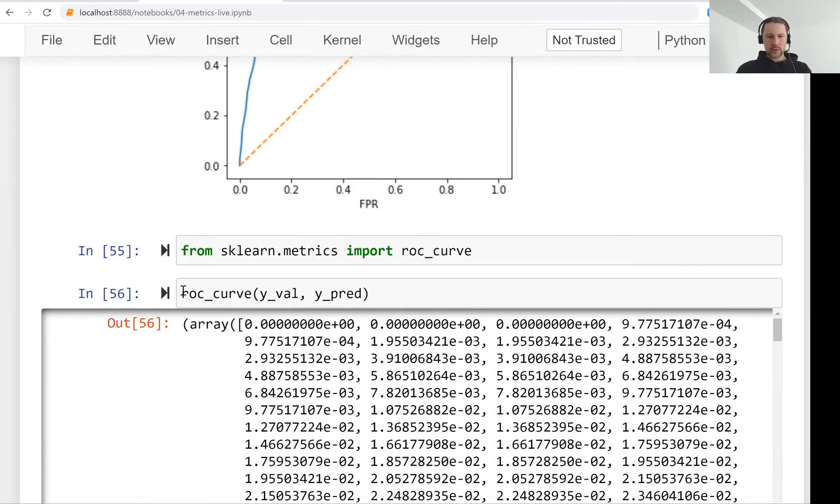And then it actually outputs three things: false positive rate, true positive rate, and thresholds for which these true and false positive rates are evaluated.